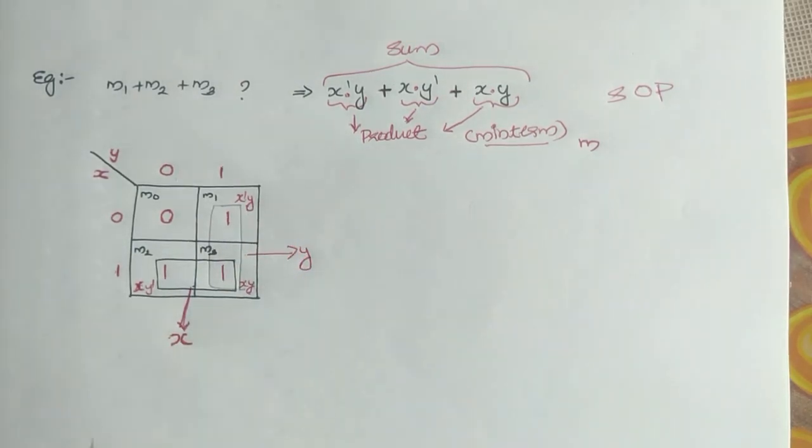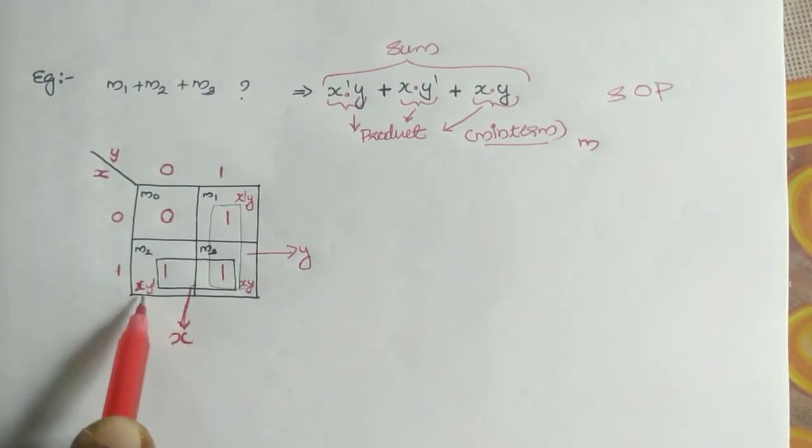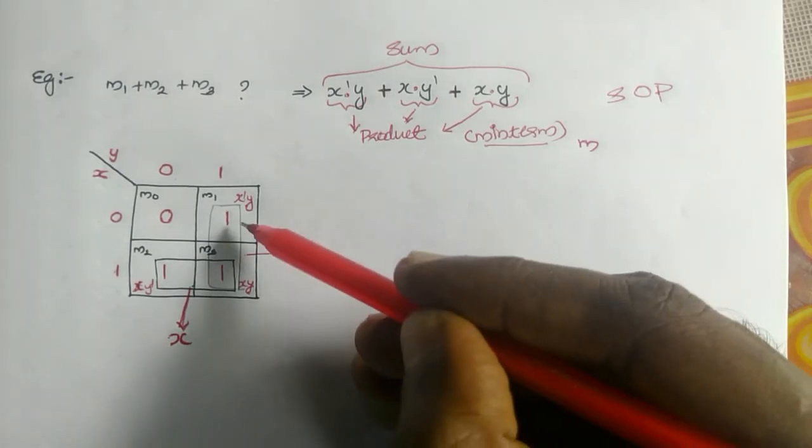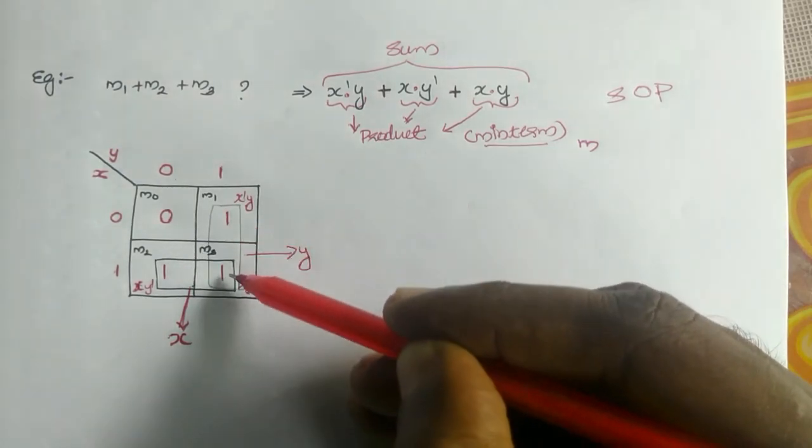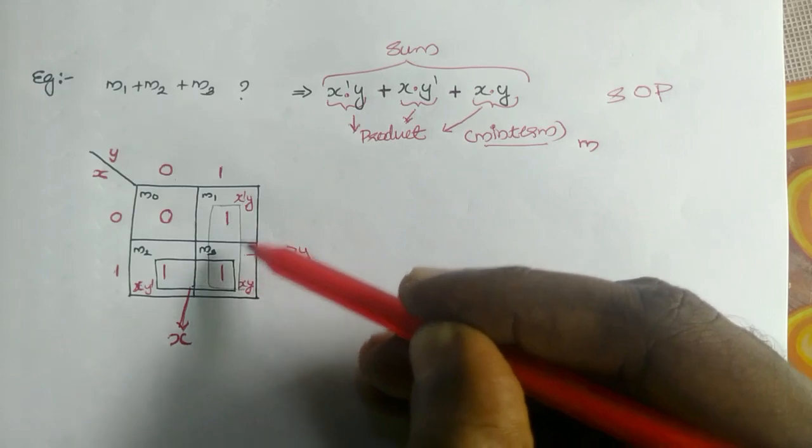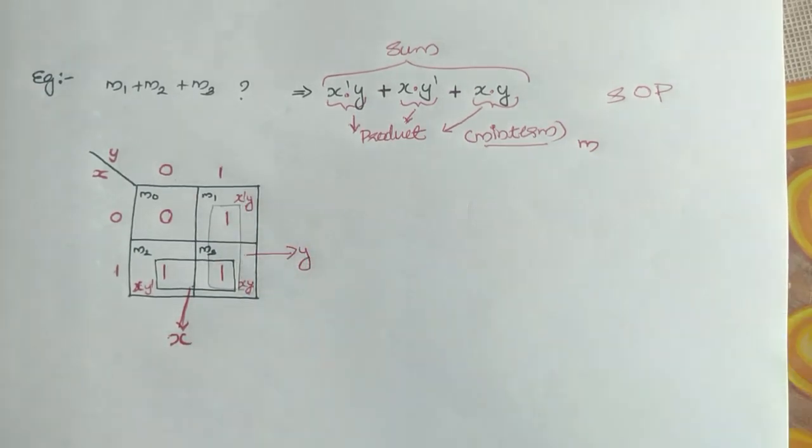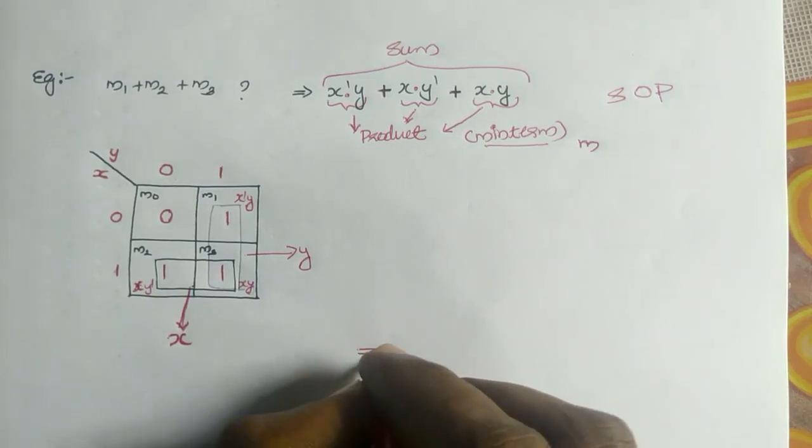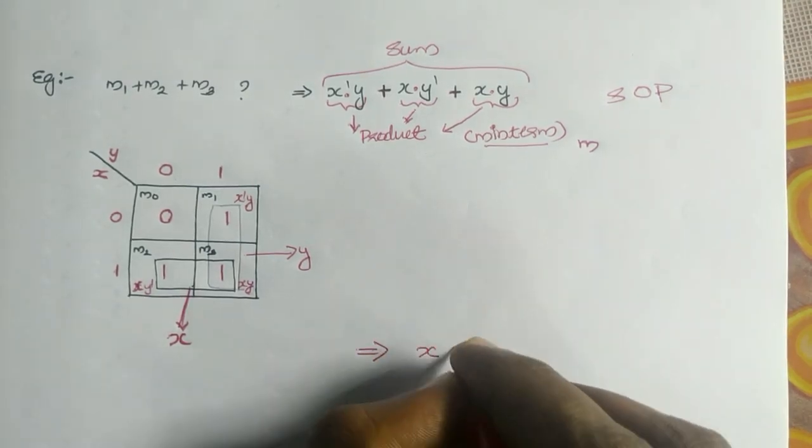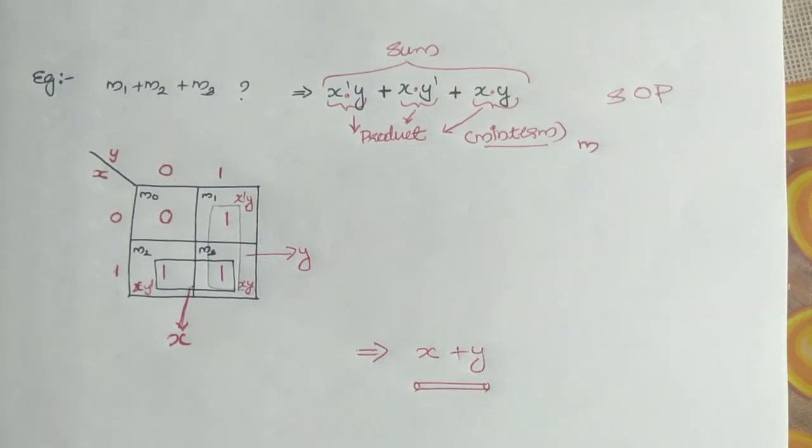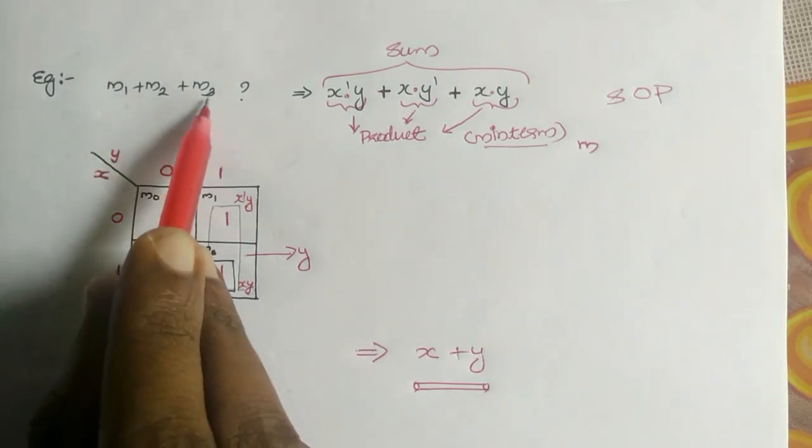So we are neglecting the variable that is having change and we are taking the value Y here, because Y does not have any change. By coupling these terms, finding these adjacent terms, X has changed and Y does not have changed, so we are taking the answer as Y. So at last, you can have the answer X plus Y. This is the simplified expression of M1 plus M2 plus M3.